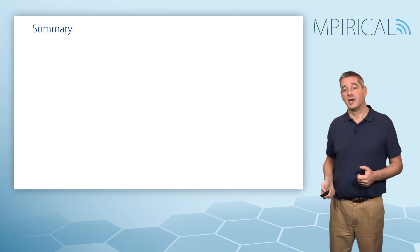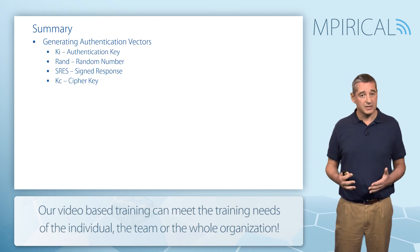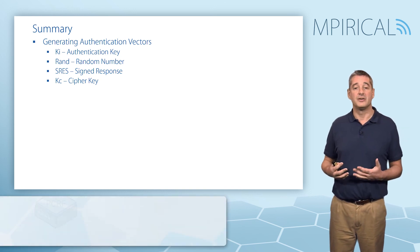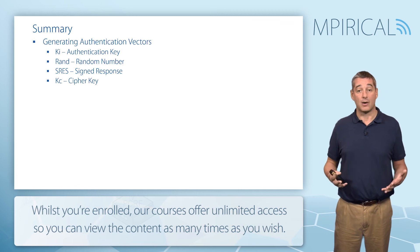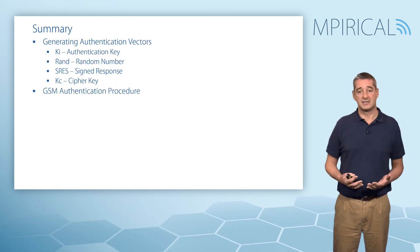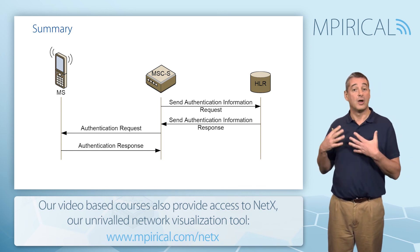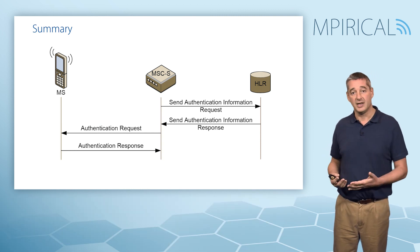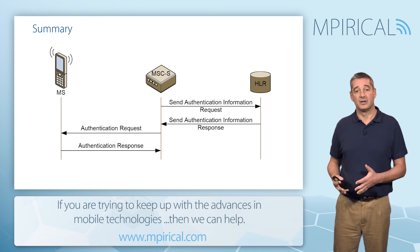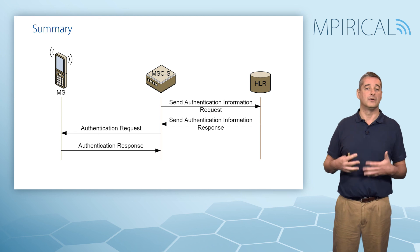In summary, in this video we looked at the method of generating authentication vectors. We have the authentication key KI, specific to a subscriber and locked onto the SIM card and the authentication center. A random number generated inside the authentication center is fed into the two algorithms A3 and A8, generating SRES the signed response and Kc the cipher key, which is used for encryption. We then examined the GSM authentication procedure: the MSC server requests authentication vectors from the HLR (made up of random number, SRES, and Kc), then issues the authentication challenge by sending the random number to the mobile and waiting for the SRES response. Comparing the two SRES values — one from the SIM card, one from the authentication center — if they match, authentication is successful.